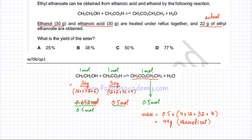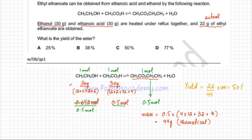We can now calculate the yield. The formula is: yield = (actual ÷ theoretical) × 100. The actual mass obtained is 22 grams; theoretically it should be 44 grams. So yield = (22 ÷ 44) × 100 = 50%. The yield of the reaction is 50% because theoretically you get 44 grams but in reality only 22 grams, so option C is the correct answer.